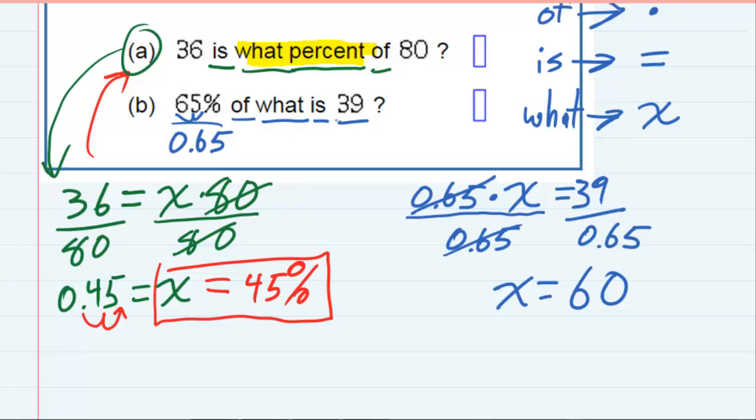Now I did say 'what,' so we're not looking for a percentage here. We are done. 60. 65% of 60 is 39. So we've answered both questions.